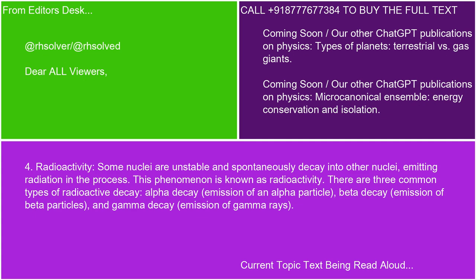4. Radioactivity. Some nuclei are unstable and spontaneously decay into other nuclei, emitting radiation in the process. This phenomenon is known as radioactivity. There are three common types of radioactive decay: alpha decay, emission of an alpha particle; beta decay, emission of beta particles; and gamma decay, emission of gamma rays.